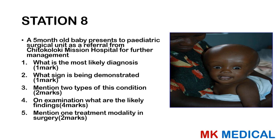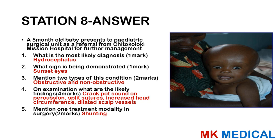This child has hydrocephalus. The sign is sunset eyes — the iris is almost sitting into the lower eyelids. The two types are obstructive and non-obstructive hydrocephalus. On examination, you may hear a crackpot sound on percussion, palpate split sutures, find an increased head circumference, and dilated scalp vessels. Treatment involves shunting: options include ventriculoperitoneal, ventricular-atrial, ventricular-pleural, and ventriculocisternal shunts.